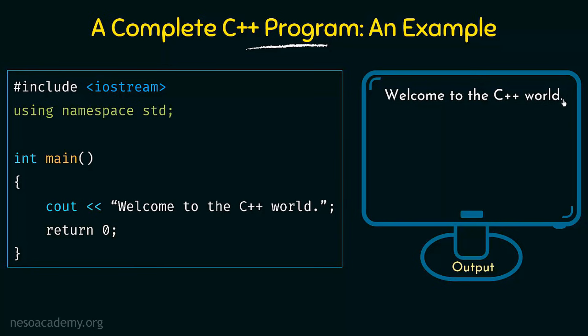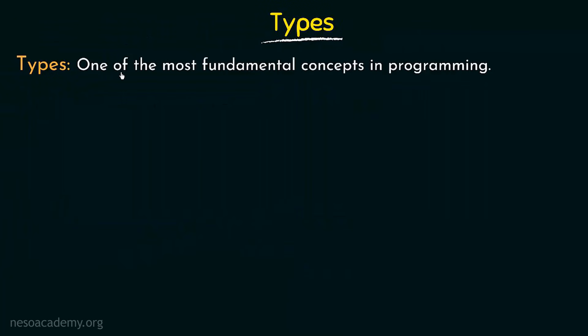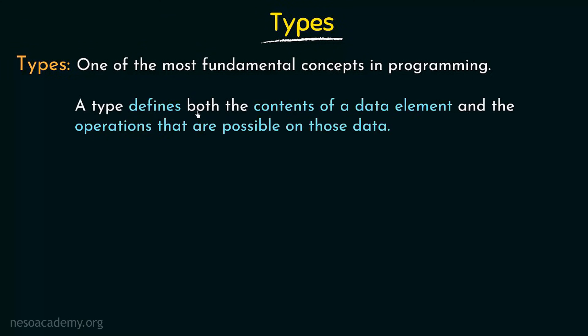Now we studied about functions. Another thing that we need to know about in a C++ program is types. Types are one of the most fundamental concepts in programming. A type defines both the contents of a data element and the operations that are possible on those data. Type specifies what kind of data element it is and what operations can be performed on it. In the previous slide when we discussed the main function we saw it had a return type of integer — so there we already saw the concept of type. It means the value that is going to be returned must be of the type integer, so every function will have a return type.